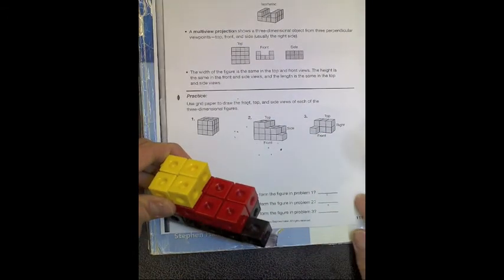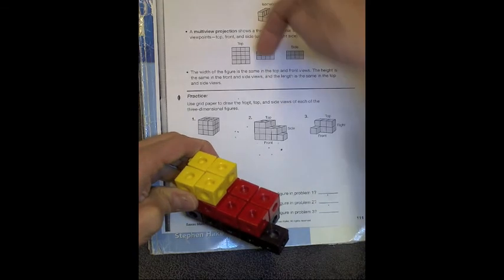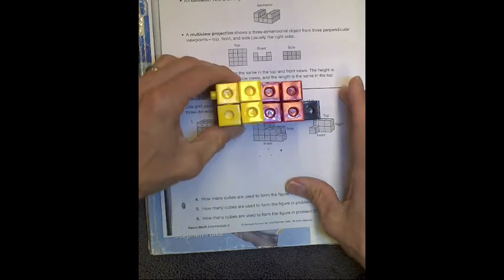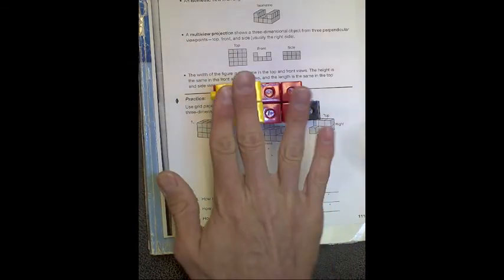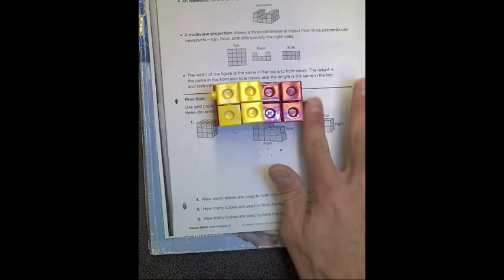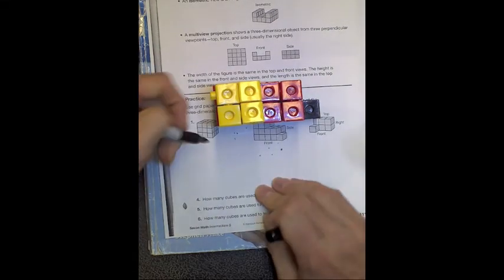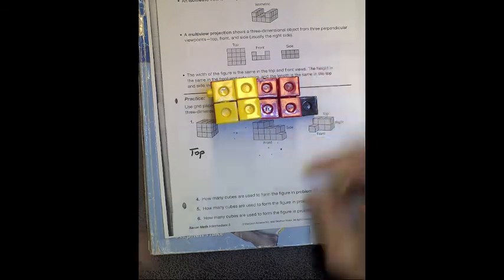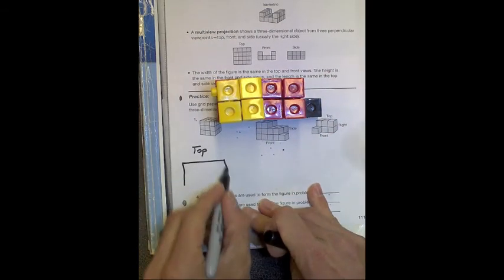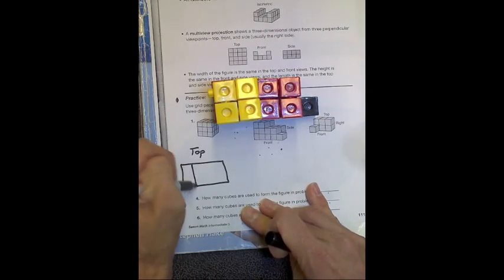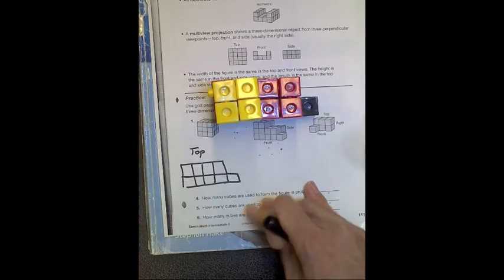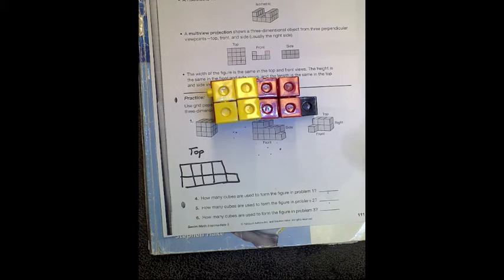Now, let's go ahead and draw it from the top. So going right down, what do you see? You see four next to four and then one. So you do need to label it for me. Please say that it's the top view. And go ahead and draw four and four with extra one sticking out.